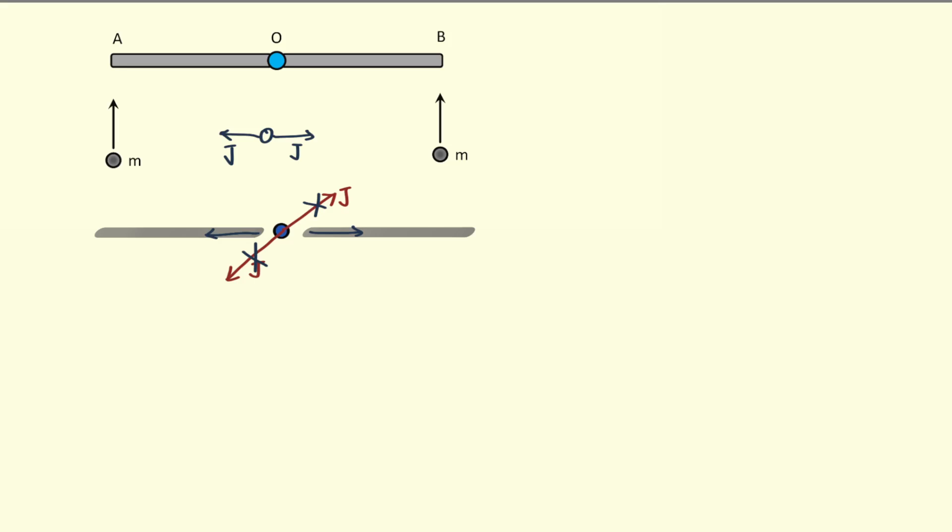Now let us focus on a system of only this point mass that hits the left rod, and the left rod itself. Let us take this as our system. After the collision, what is going to happen? Let us make the situation after the collision.